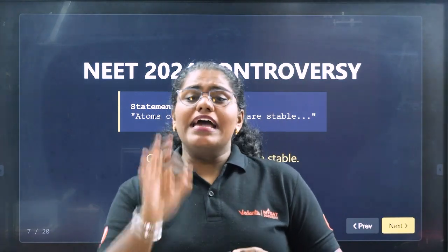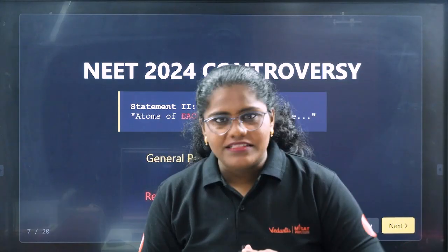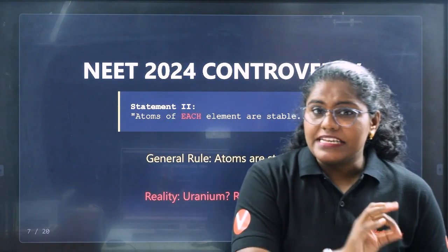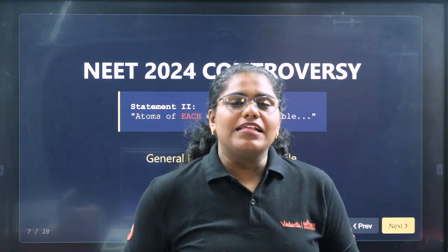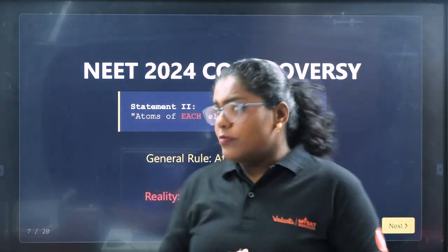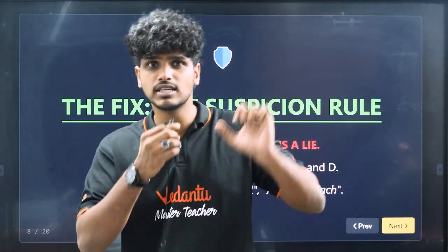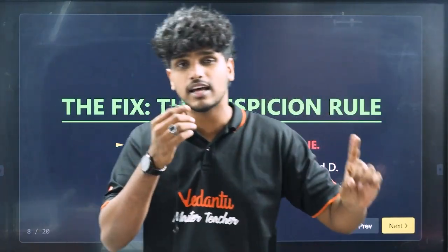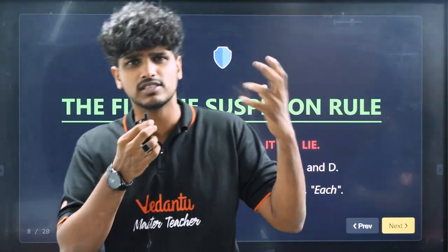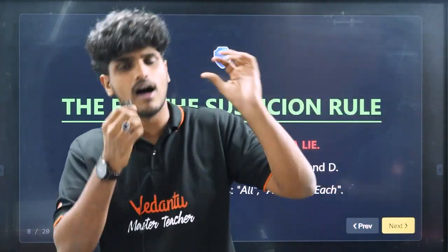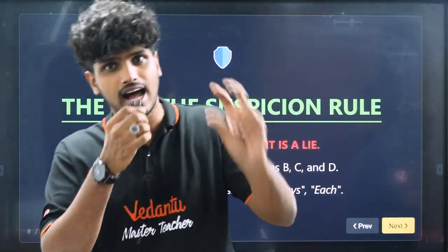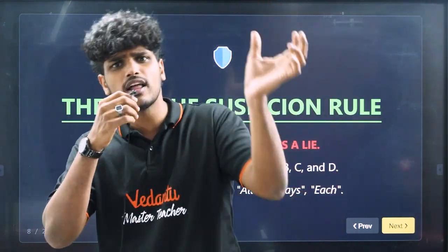Atoms are not stable except for noble gases. A stable atom can bond with another atom to form a molecule — for example, a hydrogen atom forms a molecule. So when the question asks which of the statements is correct, Option A might be zero, Option B might reference average speed, and Option C says both A and B are correct. If the first option looks correct, be careful — don't stop there.